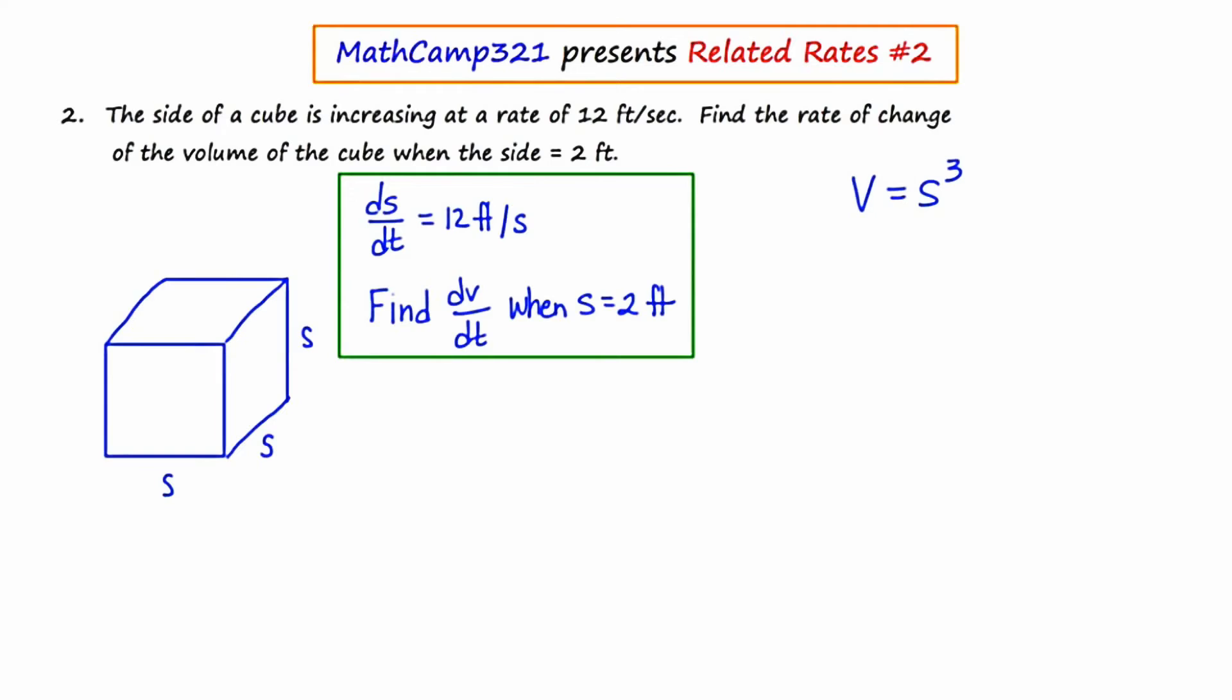Because these variables are changing over time, I cannot substitute into the equation until I've taken a derivative. So I'm at that stage now where I'm going to take the derivative. And I need to remember that I'm taking it with respect to time t. So if I take the derivative of V with respect to t, I end up getting dV/dt. If I take the derivative of s cubed with respect to t, I'm going to get 3s squared ds/dt.